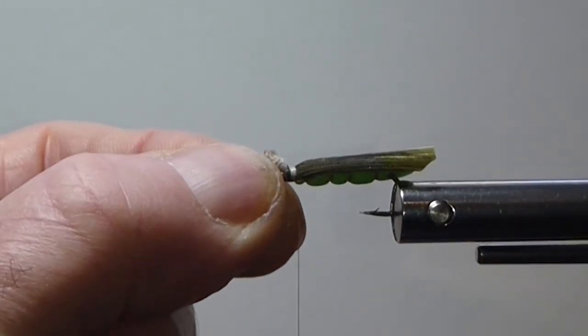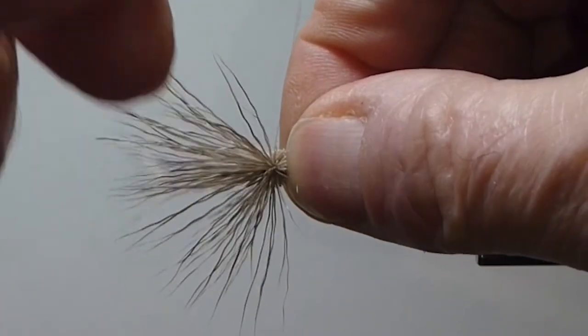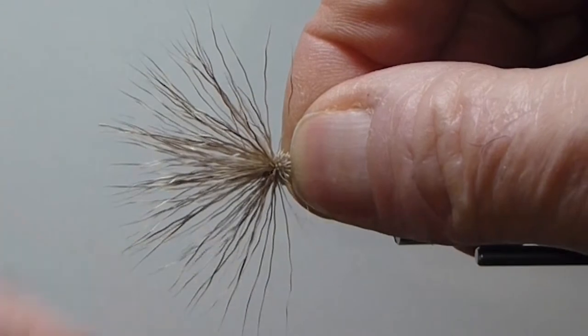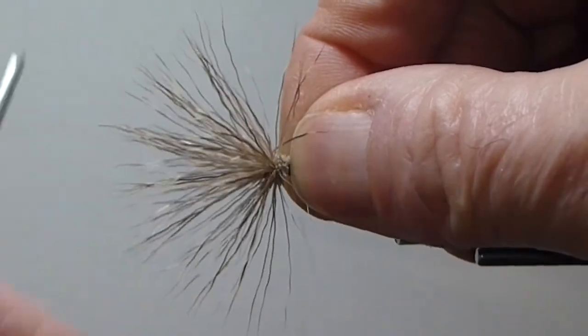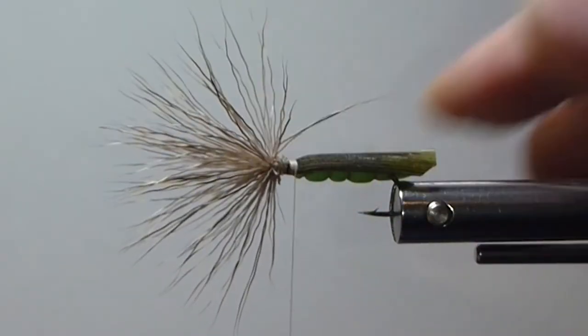Just really close to the end of those butts. A couple turns. And now it should flare nicely. There won't be a lot of that butt showing through. You can tighten that down. We're using six-aught thread. Just snug. You don't want any of those butts coming up more than you can.